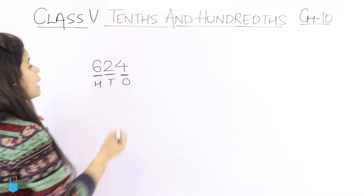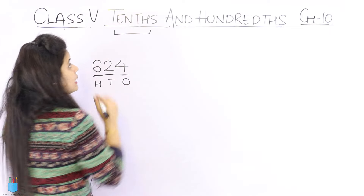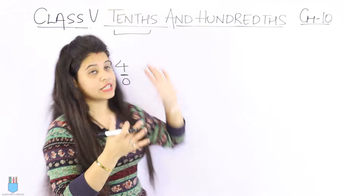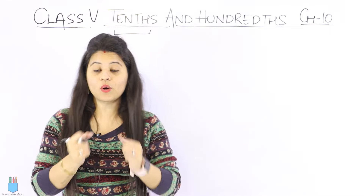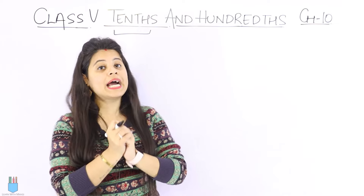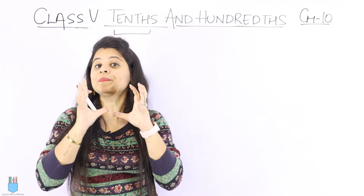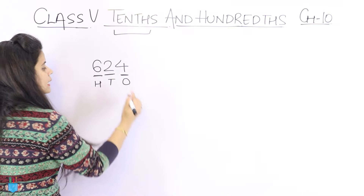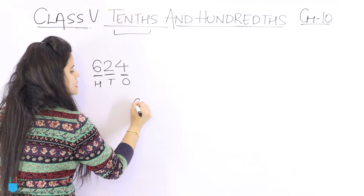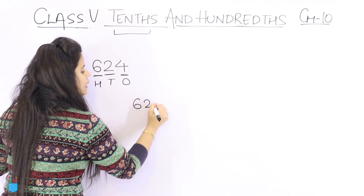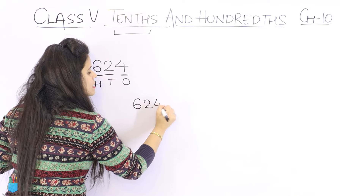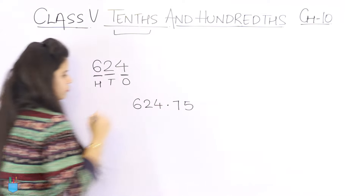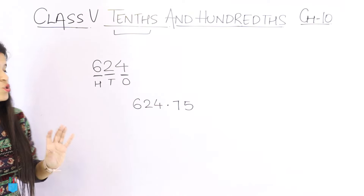Now, the word here — it's not just tens. It's tenths and hundredths. This comes when we talk about decimal numbers. Like, if it's the same number — it's 624.75.